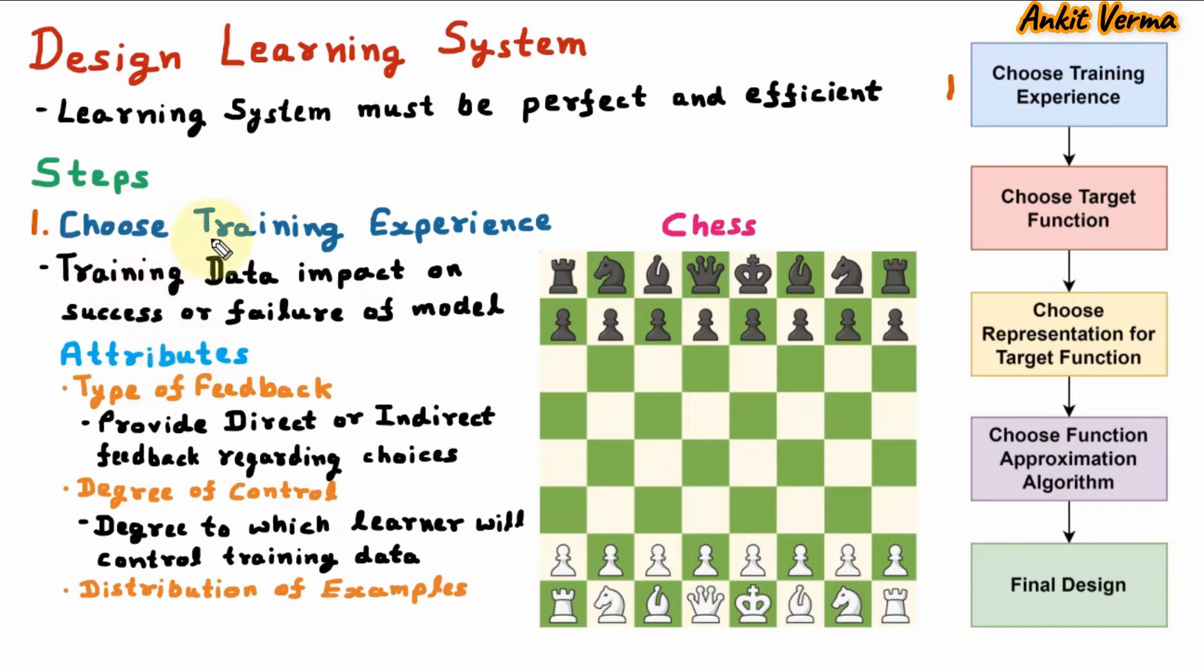Next attribute of choosing training experience is distribution of examples. Training data must represent distribution of examples from which performance is measured. Here when we are training the chess model, they must try more and more combinations, more situations and multiple examples so that they can give the best performance and it can be easily measured. So these are the three attributes of choosing training experience or data.